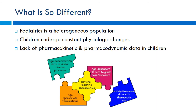Why is pediatrics so different? Can you just treat them like little adults? You can't. They're a very heterogeneous population. If you think about a 24-week gestational age neonate versus a 16-year-old, there are huge differences in their biology. They undergo pretty much consistent changes through that entire time period, and that affects drugs in several different ways.